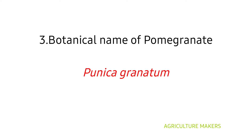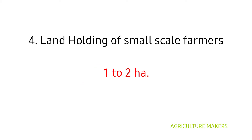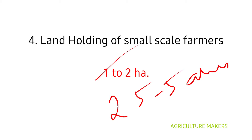Botanical name of pomegranate is Punica granatum. Next, land holding of small scale farmers is 1 to 2 hectares, which is also called 2.5 to 5 acres. You have to also read for marginal farmers, small farmers, semi-medium, medium, and finally the large farmer which is greater than 10 hectares.